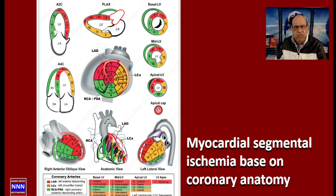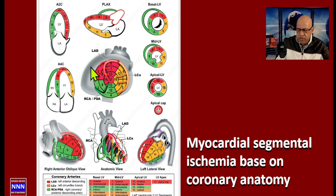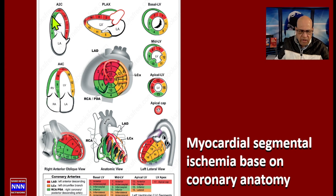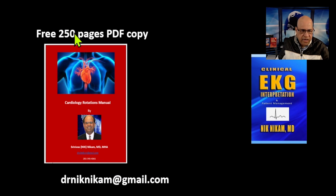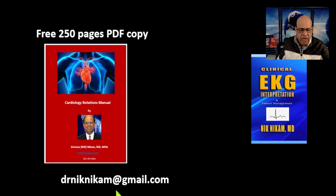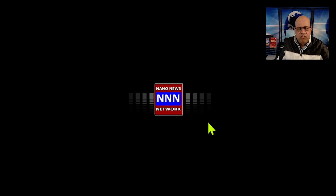This has been a quick synopsis of correlating the various myocardial segments with coronary anatomy, determining the extent and location of myocardial ischemia, the potential artery causing the problem, and overall heart size and ejection fraction. Thank you so much for watching. Please subscribe to our YouTube channel, and you can get a free copy of my Cardiology Rotation Manual by sending an email to drnicknicknickham@gmail.com.